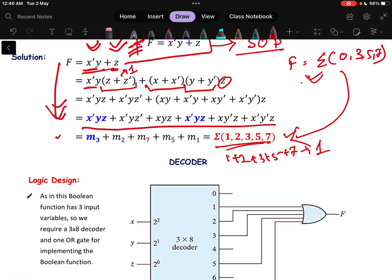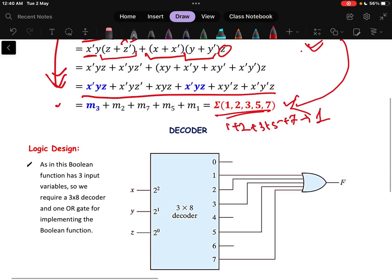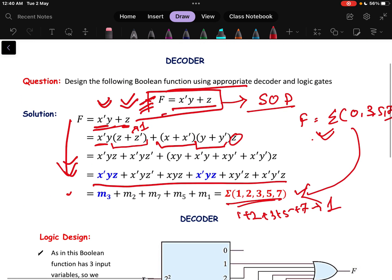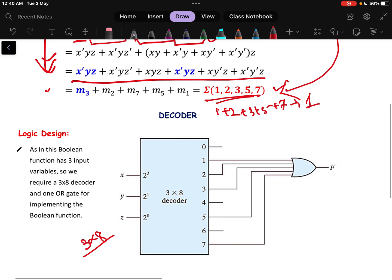How to do the final function now? See here it will be a 3 cross 8 decoder. Why 3 cross 8 decoder? Because we can clearly see there are 3 variables. 3 cross 8 decoder means there will be 8 outputs that starts from 0 to 7, d0 to d7.